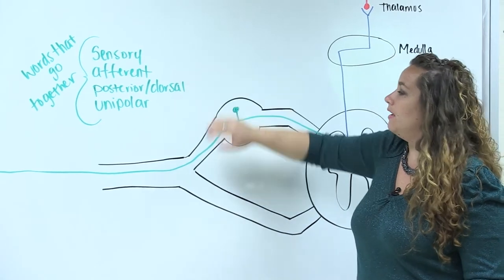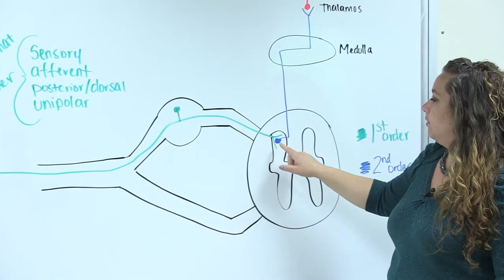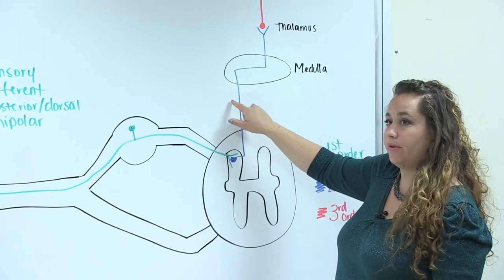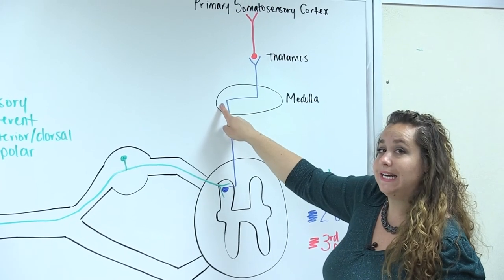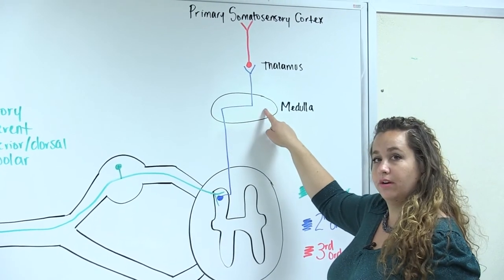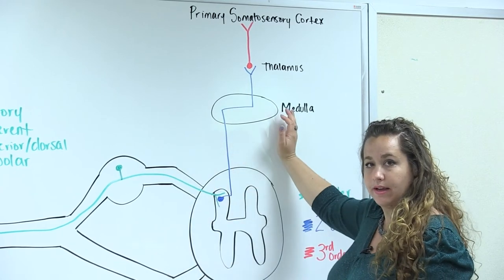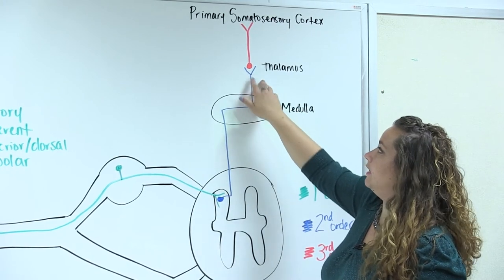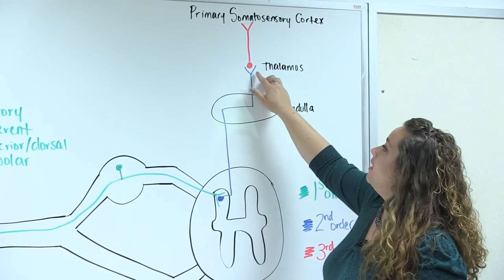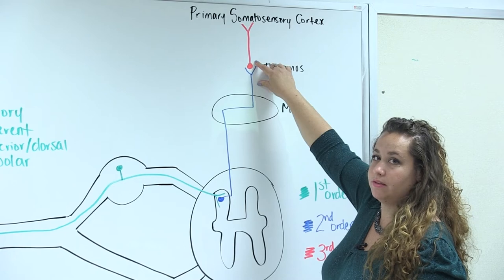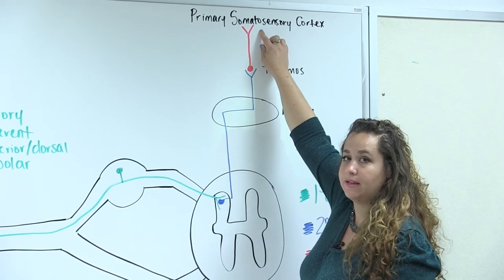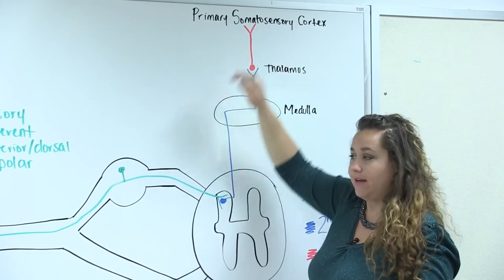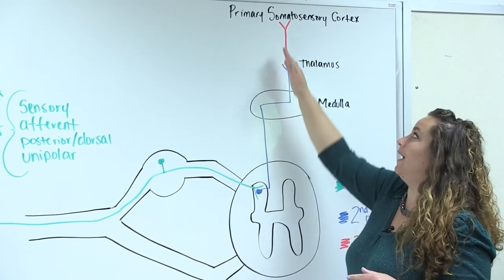This first neuron will synapse in the posterior gray horn with another neuron that carries the information up the spinal cord. Once it gets to the medulla, it's going to decussate, which means cross over. So if it was carried up the right side, it crosses over to the left, and continues on to end in the thalamus — you can see the axon terminals, that's where it ends. The receptor passes the information to the neuron in green, who passes it to blue, and then passes it to red, so that eventually it ends up in the primary somatosensory cortex.